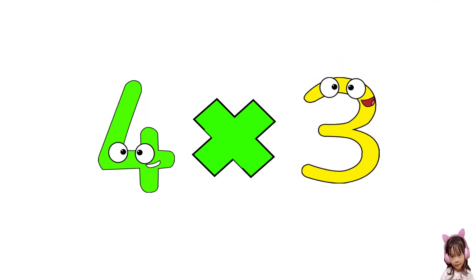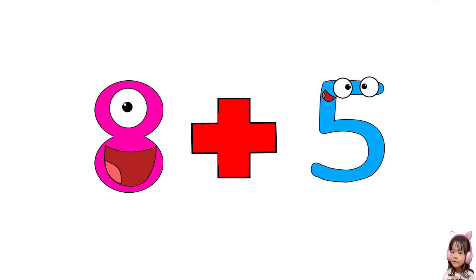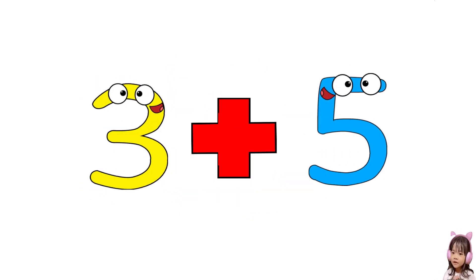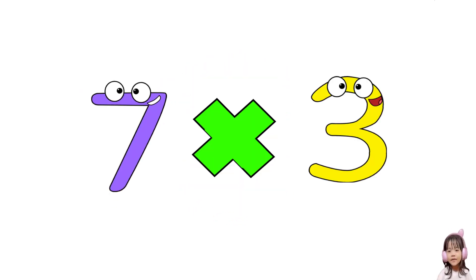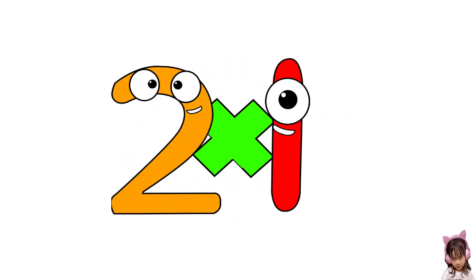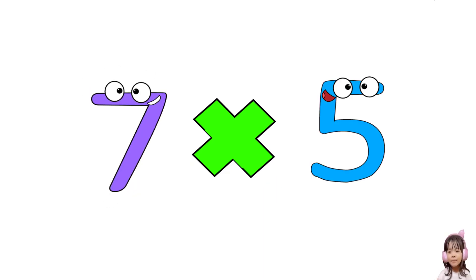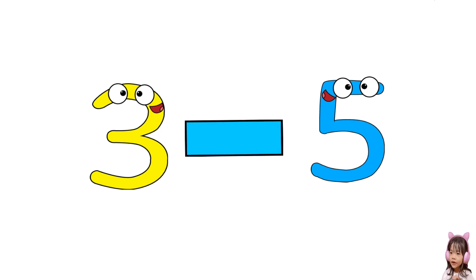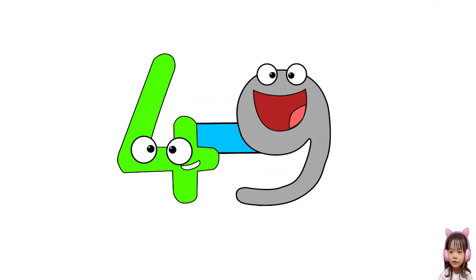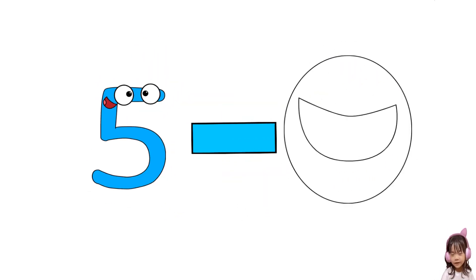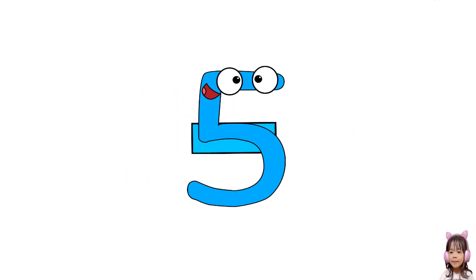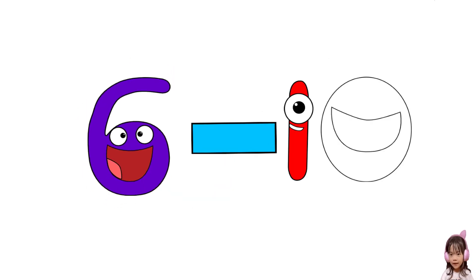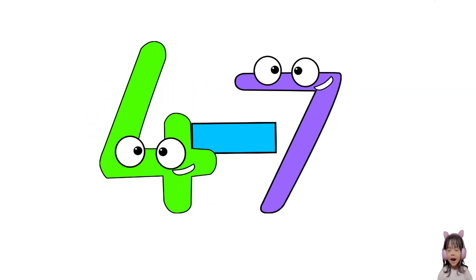Seven times three equals twenty-one. Seven times five equals thirty-five. Five. Three minus five equals forty-nine. Five minus zero equals five. Six minus seven equals fifty. Six minus ten equals forty-seven. Three plus six equals nine. Ten plus five equals fifteen. Four plus nine equals thirteen. Zero times zero equals zero.